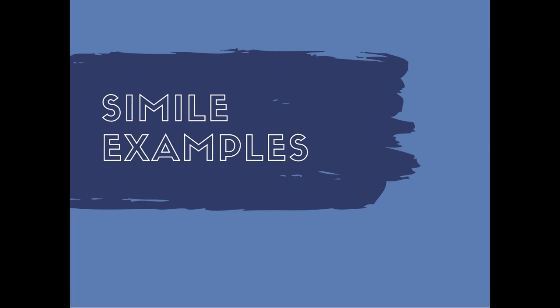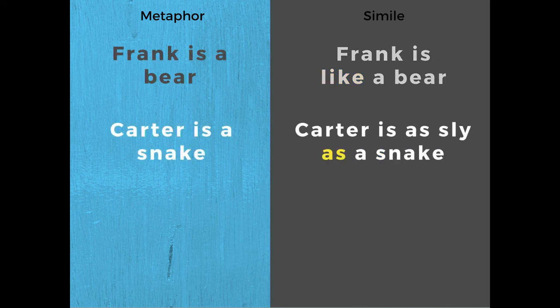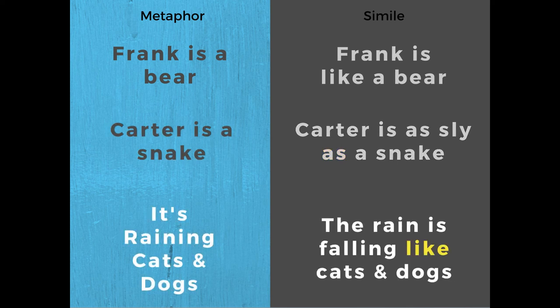Let's look at a few examples. If you're describing Frank as a big guy, a simile can be used such as: 'Frank is like a bear.' If you're describing Carter as a sly and sneaky person, a simile can be used such as: 'Carter is as sly as a snake.' And if you're describing heavy rain, a simile can be used such as: 'The rain is falling like cats and dogs.' As you can see, the simile ties the comparison together explicitly with the words 'like' or 'as.'